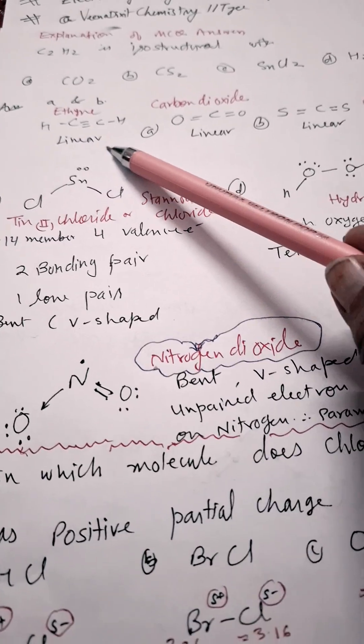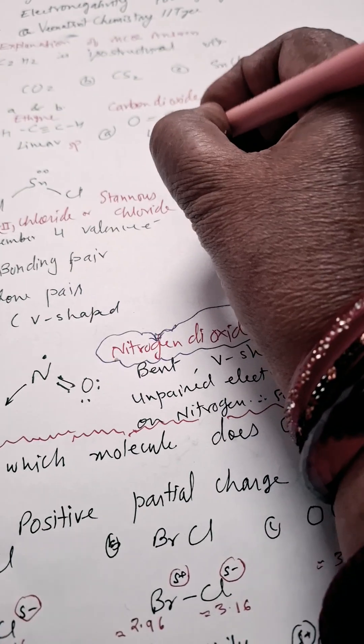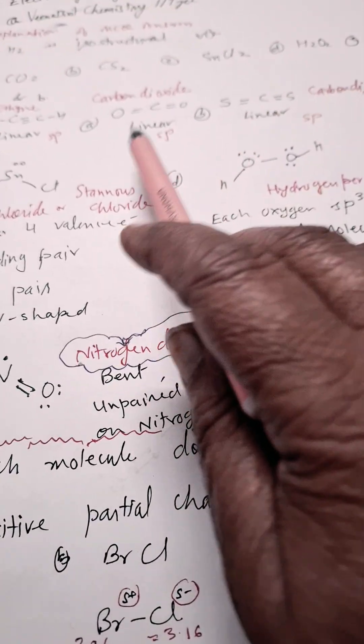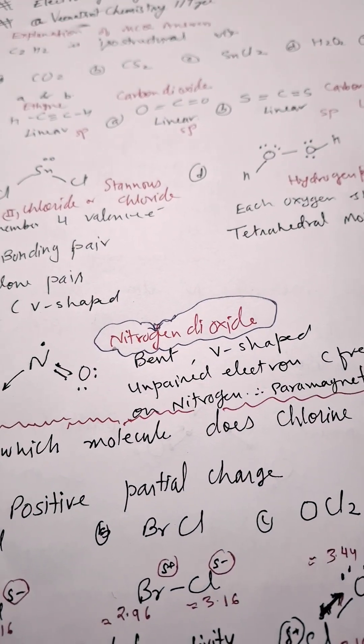We know that they are linear in shape, SP hybridization is there. So this is SP hybridized, this is also SP hybridized. Carbon dioxide and CS2 carbon disulfide is also SP hybridized, so they are isostructural because all of them are linear shape.